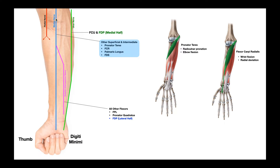The median nerve gives off several direct motor branches to muscles in the forearm. But notice that the median nerve also gives off a very large major branch called the anterior interosseous nerve, which itself gives off motor branches to several muscles — we'll come back to that in a few minutes. The direct motor branches from the median nerve go to: pronator teres, flexor carpi radialis, palmaris longus, and flexor digitorum superficialis.